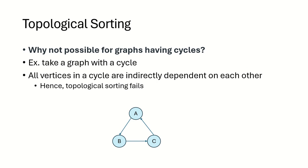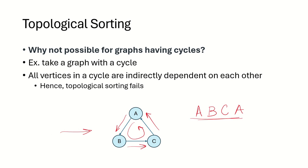Is it possible for graphs having a cycle? No, it is not possible. Consider a graph with a cycle between three vertices. B has a dependency on A because there is an edge from A to B, so A has to come before B. There is an edge from B to C, so B has to come before C. Then there is an edge from C to A, meaning C has to come before A. This creates an unresolvable ordering — all these vertices are indirectly dependent on each other, so topological sorting fails.